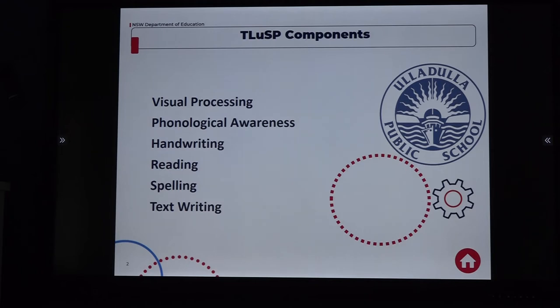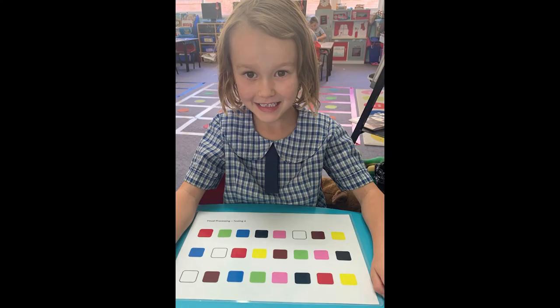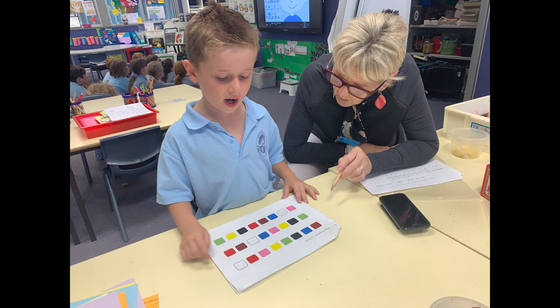The first component is called visual processing, which is the rapid naming of objects we know the name of and can actually see. In our program we use three rows of coloured squares. The same eight colours are in each row but in a different order, and we have six different test pages so that children don't learn that order. Children are timed while naming the colours following reading directionality, that is left to right and top to bottom.